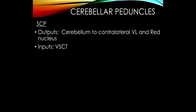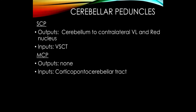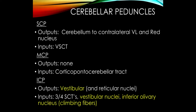Now let's repeat everything with respect to the cerebellar peduncles. The superior cerebellar peduncle is mainly output — all information from the cerebellum out to the VL and motor cortex and to the red nucleus goes through it. The only input through the superior cerebellar peduncle is the ventral spinocerebellar tract — the one that crosses twice. The middle cerebellar peduncle has just one pathway: the corticopontocerebellar tract. The inferior cerebellar peduncle is predominantly input: three of the four spinocerebellar tracts.